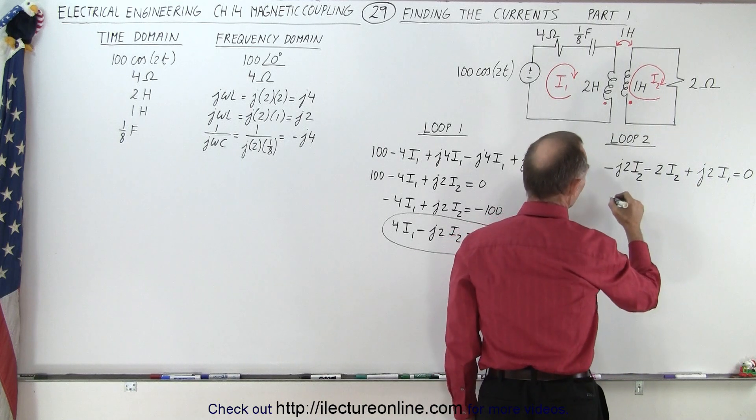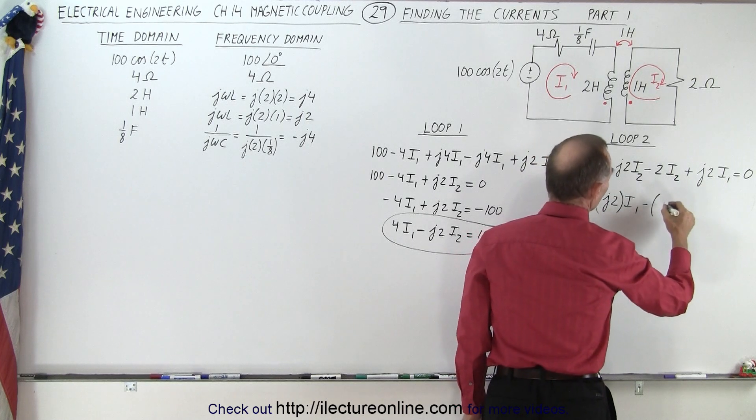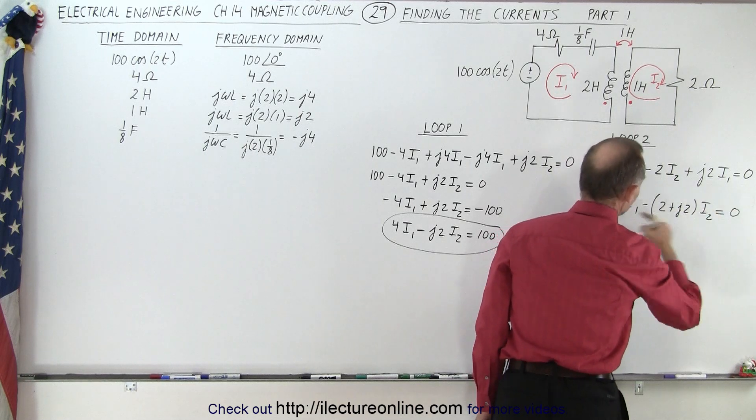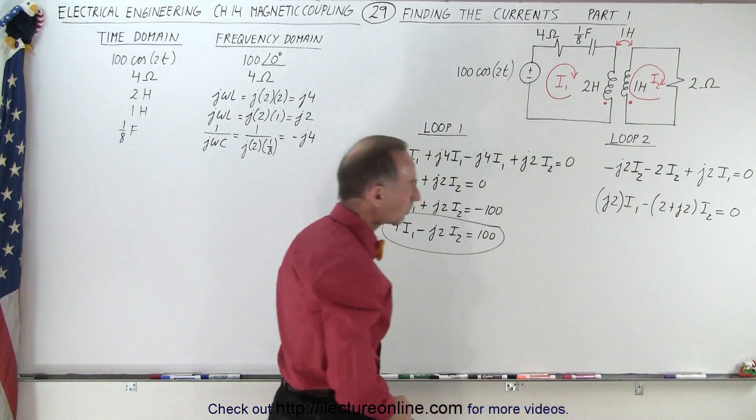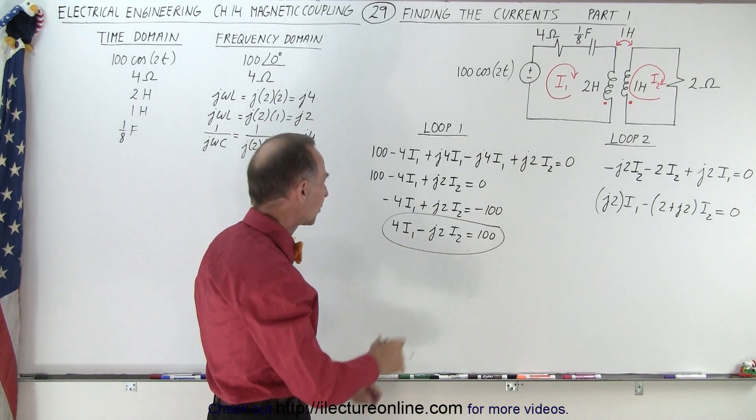So combining this, we end up with J2I1 minus 2 plus J2I2 equals zero. I like to write it like this. So now we have our two equations.